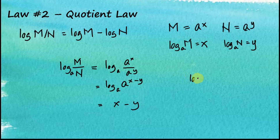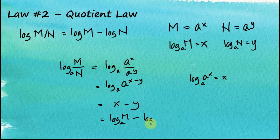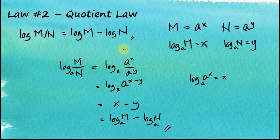We know that log base a of a^(x minus y) = x minus y. Since x = log base a of m and y = log base a of n, this becomes log base a of m minus log base a of n. This is the proof for the quotient law.